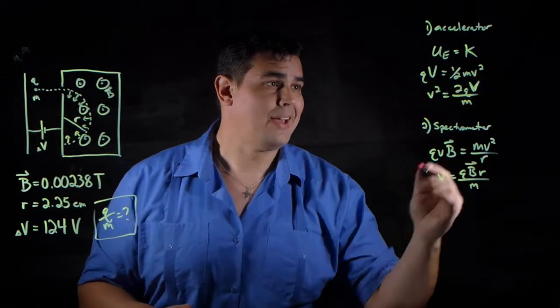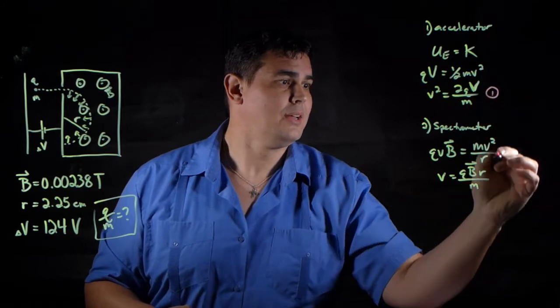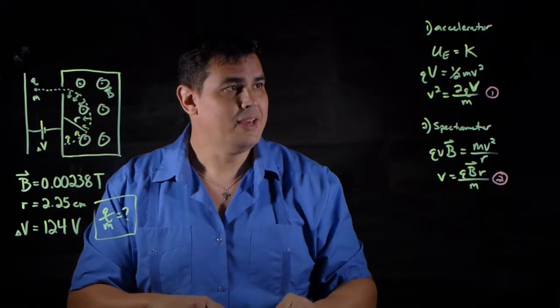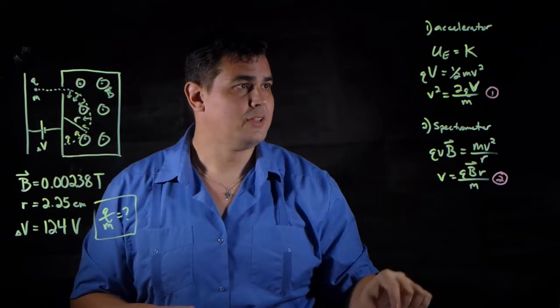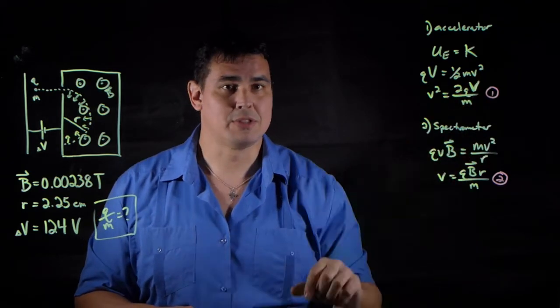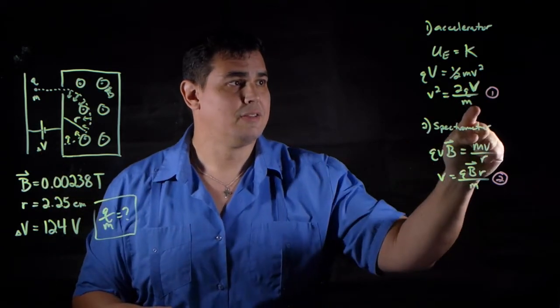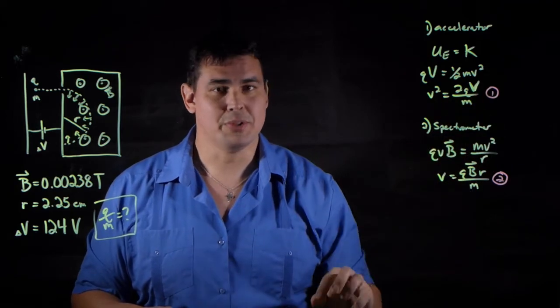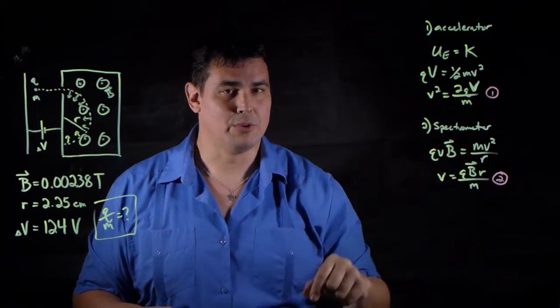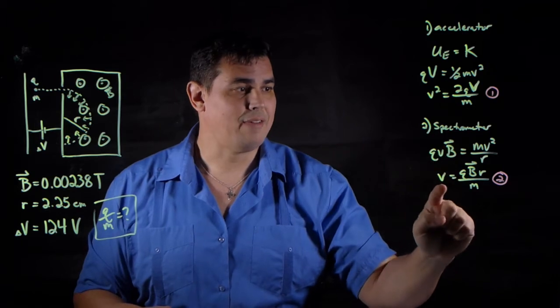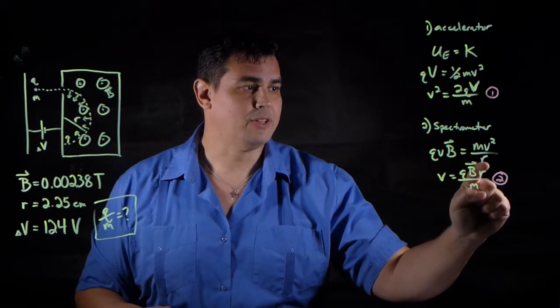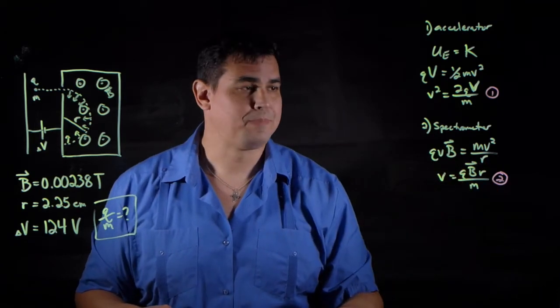Now I have two equations. Here's number one, and here's number two. Number one is v squared equals 2 times the charge times the voltage here divided by the mass. When you're doing this, don't mix up your velocities and your voltages. The second one, I have velocity equals charge times field times radius divided by the mass.